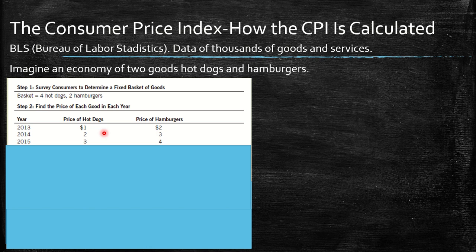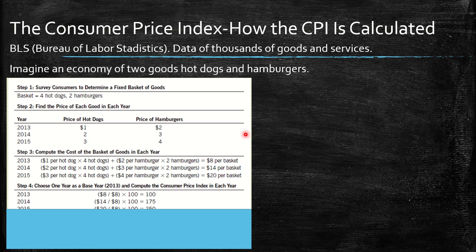Step two for constructing the CPI: we find the price of hot dogs and hamburgers across different years — from 2013 to 2015. In 2013, hot dogs are $1 and hamburgers are $2. We see an increase for both goods over time.